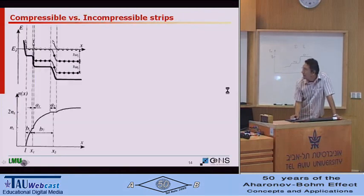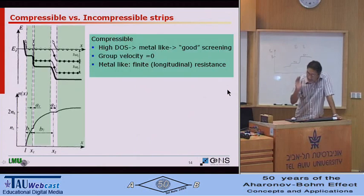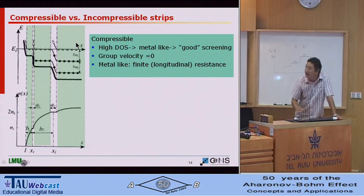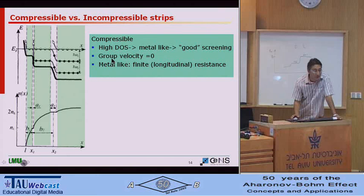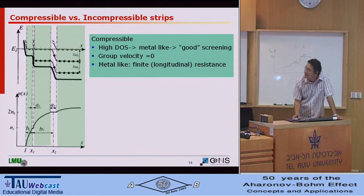Let's look at these two, because this will be important later on. Compressible state is where your Fermi energy is equal to Landau level. You have high density of states, metal-like, good screening. Edge velocity is zero, however. Because it's a metal, there is no potential variation. And then it's a metal because there is a finite longitudinal resistance for normal electrons.